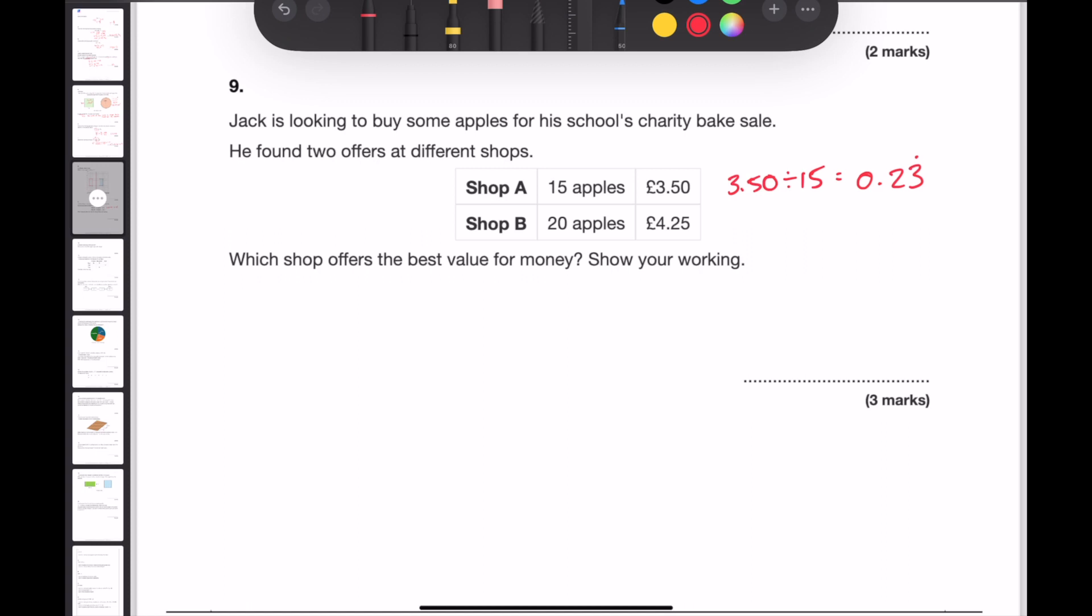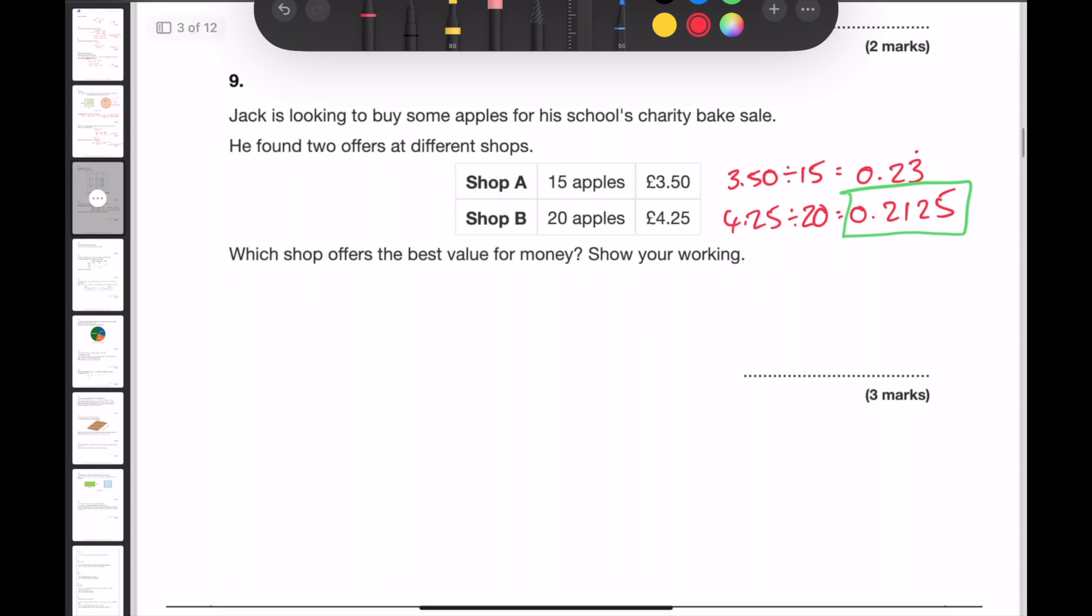In shop B, if we do 4.25 divided by 20, I get 0.2125. Here you can see that shop B has a smaller price per apple. And therefore, shop B is the best value.